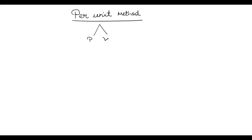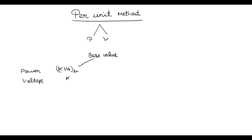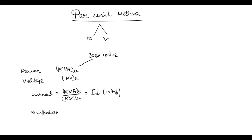In this method, only power and voltage values are taken as base values, and then we derive the base values of other quantities like current and impedance. For example, if the base value of power is in kVA and voltage is in kV, then base current IB equals kVA upon kV — both base values — giving IB in amperes. Base impedance ZB equals VB upon IB.